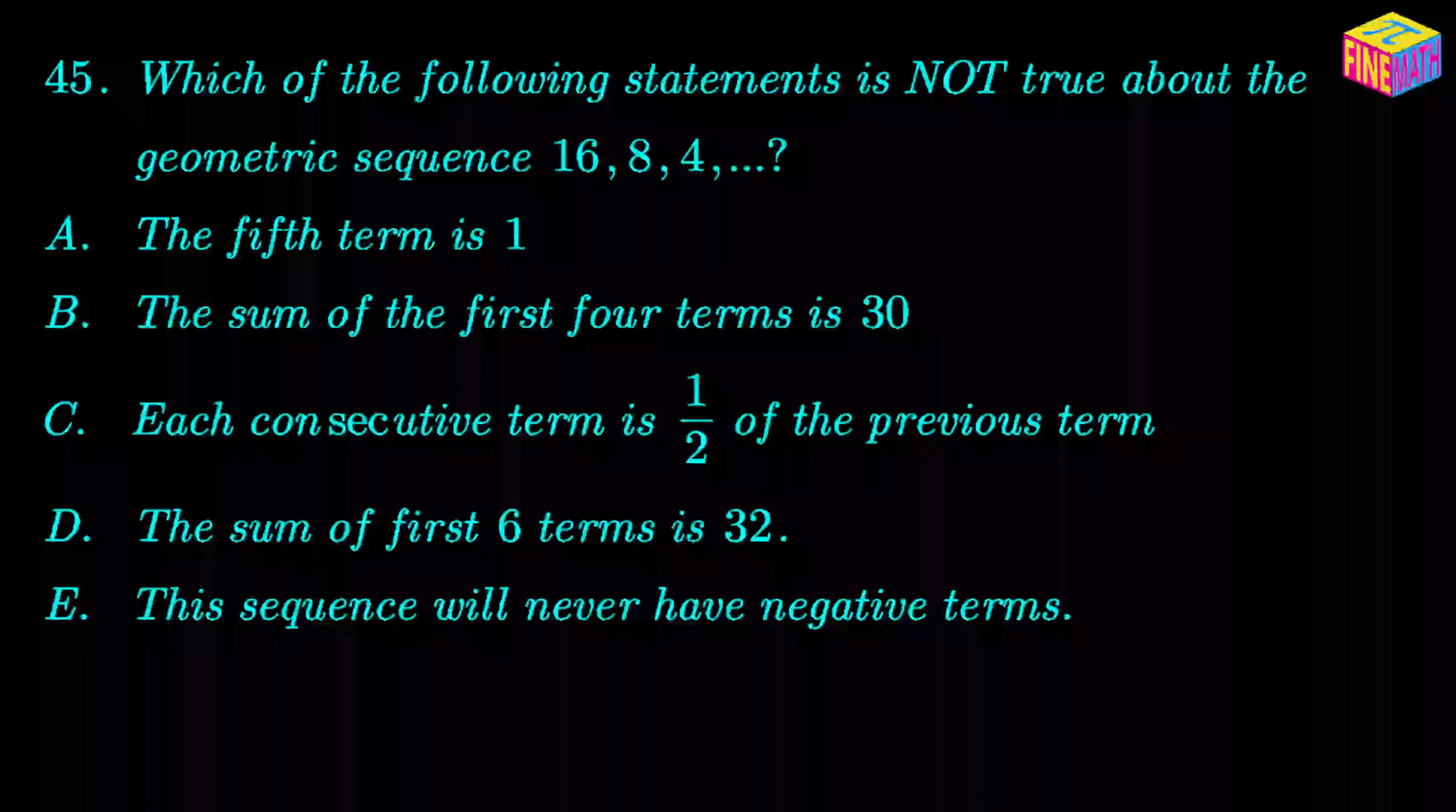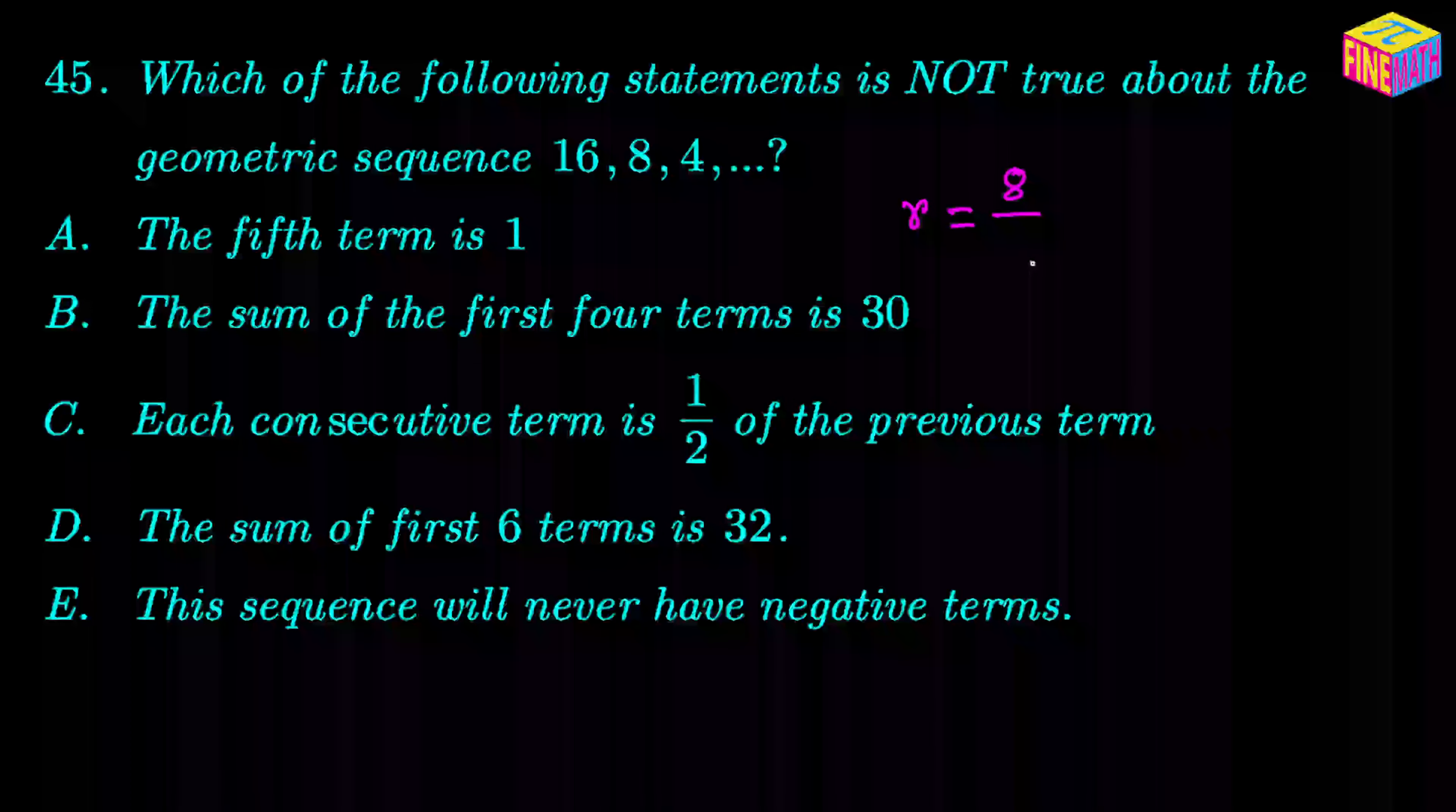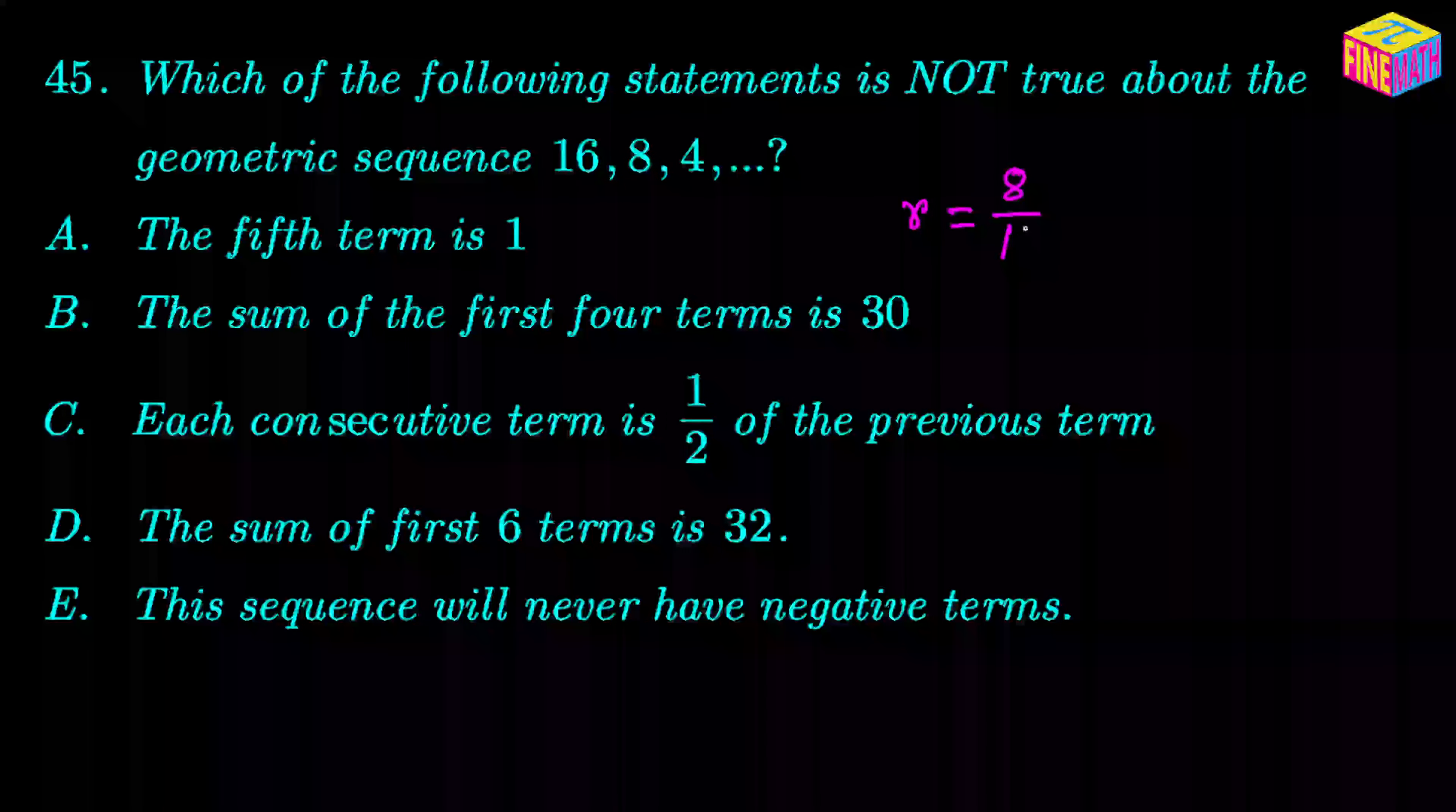So what would be the common ratio of this geometric sequence? Well, if we say the common ratio is r, that would be equal to 8 over 16. If we divide the second term by the first term we get the common ratio, and in this case this is actually one half. So for this geometric sequence the common ratio is one half.